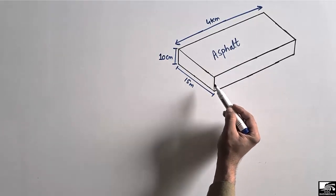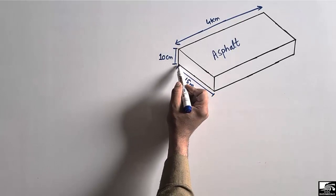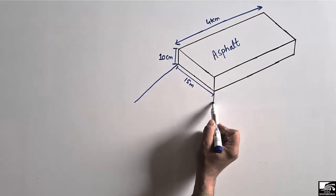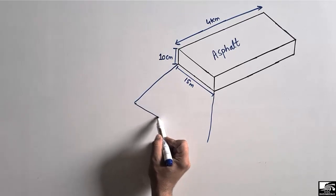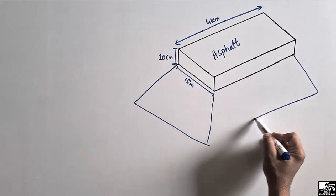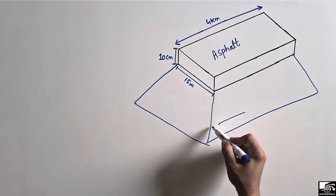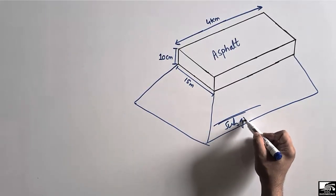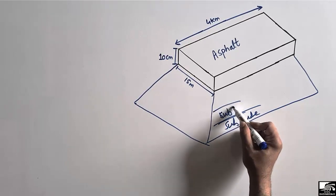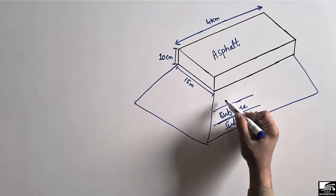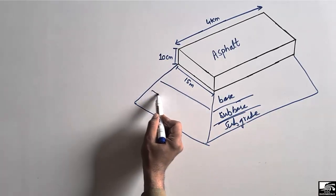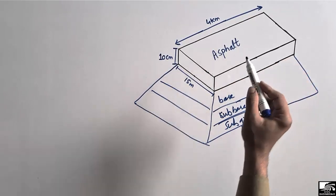The asphalt is placed on top of different layers. There are different kinds of layers on which this asphalt has been placed. For example, the subgrade layer is placed at the bottom of the flexible pavement, then the subbase layer, and then the base course.